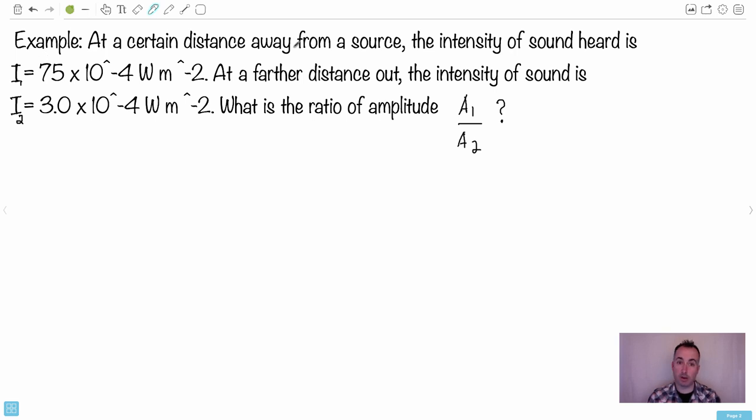At a certain distance away from a source, the intensity of sound heard is I₁ = 75×10⁻⁴ W/m². That's a power over a surface area. At a farther distance out, the intensity of the sound is I₂ = 30×10⁻⁴ W/m². So it's smaller, which makes sense because if you've got sound from someplace, the farther away you go the intensity should go down.